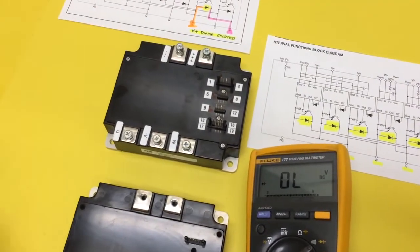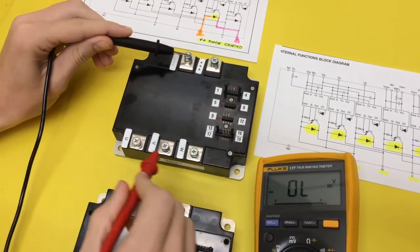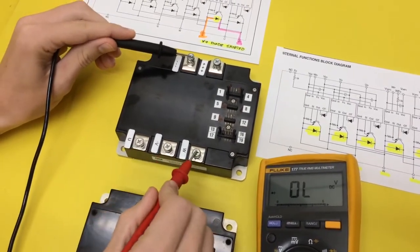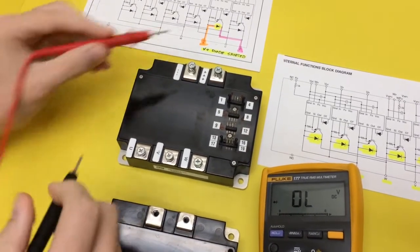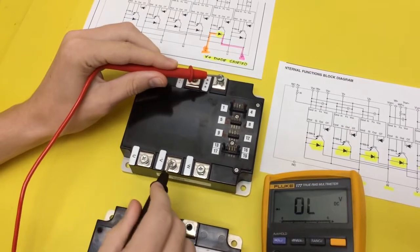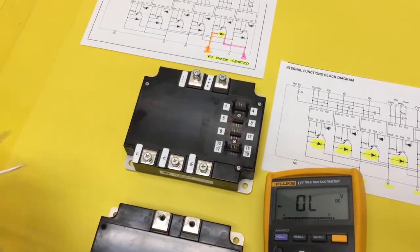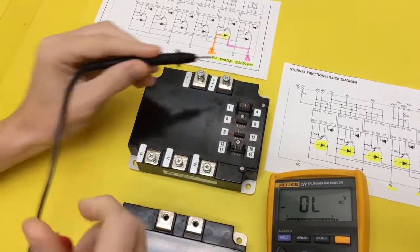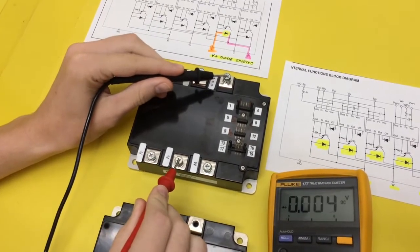Okay, so those tested good. Swap. Those all test good. Now we're going to get on the positive and here's where we're going to see our problem on V plus. So that reads bad. Go to W. Now swap your meter leads. Good, bad.